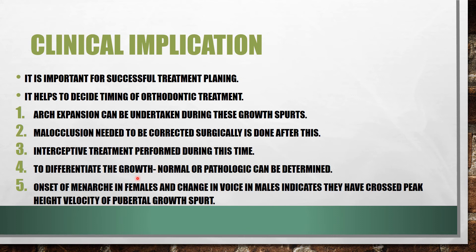Growth spurts also help differentiate normal from pathologic growth. There is individual variation, but puberty and adolescent growth spurts occur on average about two years earlier in girls than in boys. This has an important impact on the timing of functional appliance therapy, which must be done earlier in girls to take advantage of the adolescent growth spurt. In girls, functional appliances should be used in the late mixed dentition stage; in boys, in the early permanent dentition stage.